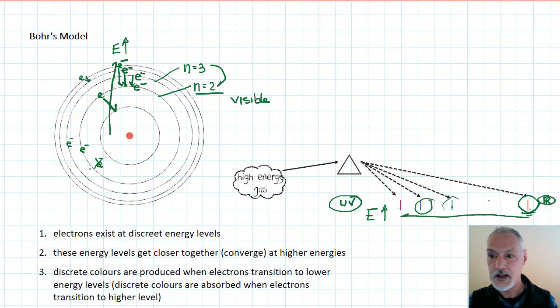He therefore also hypothesized that when electrons transition in the other direction, so when they move from closer orbits to more distant ones, they essentially absorb the colors, producing our absorption spectrum.